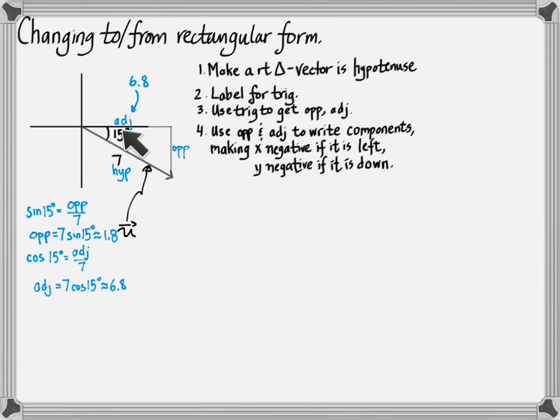So the x component is going to be this adjacent. That's horizontal. The vector is going to the right. Here's the tail. The x part is to the right. So that means this x component is positive.